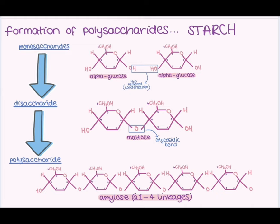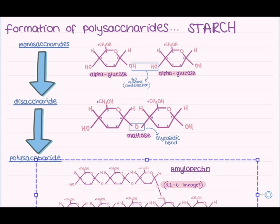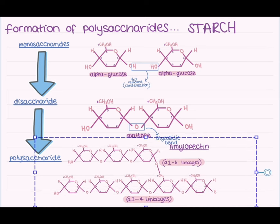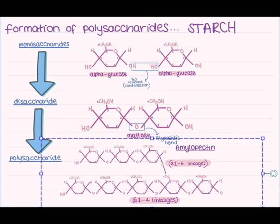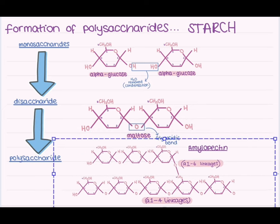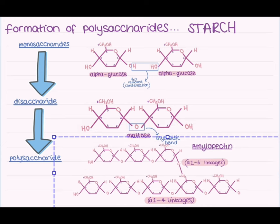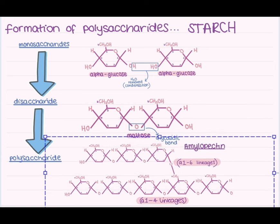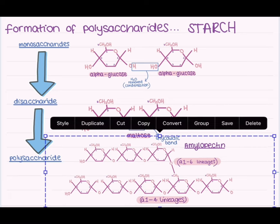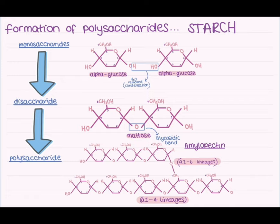Starch has two different structural forms: amylose and amylopectin. Amylose is a linear molecule consisting of 1,4 linkages only, so the monosaccharides are arranged in a uniform straight line. The 1,4 linkages mean the glycosidic bond is formed between C1 of one glucose and C4 of the other. Amylopectin still has the same linear base as amylose, but also has branching resulting from 1,6 linkages, where a secondary chain is bonded to the primary chain at C6. Amylopectin typically has repetitive branching per 20 glucose molecules.